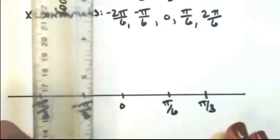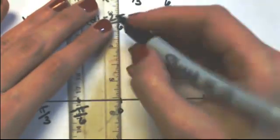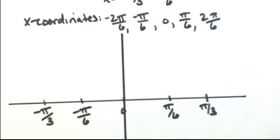So now I know where my y-axis is. Since the amplitude is 2, I need to mark out where 2 would be.